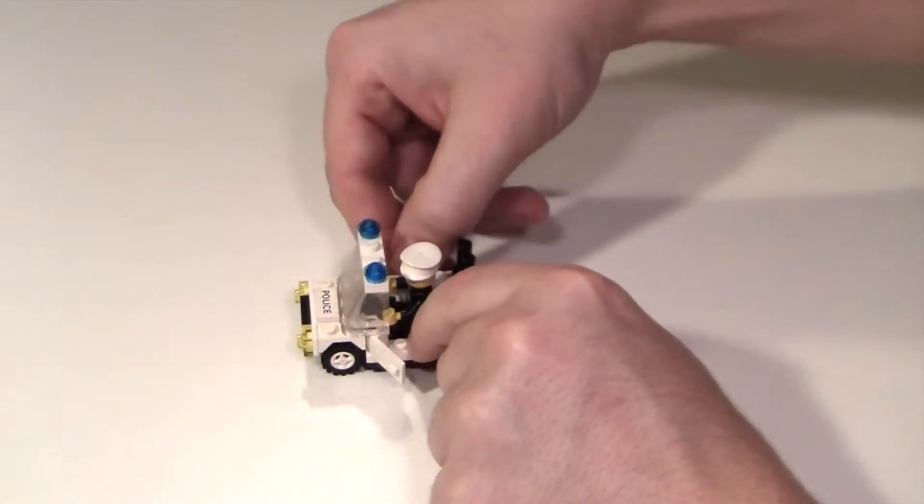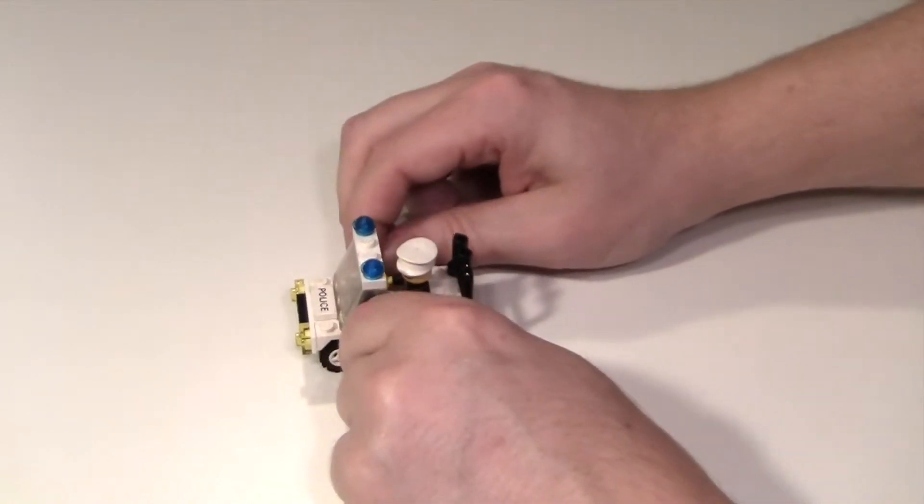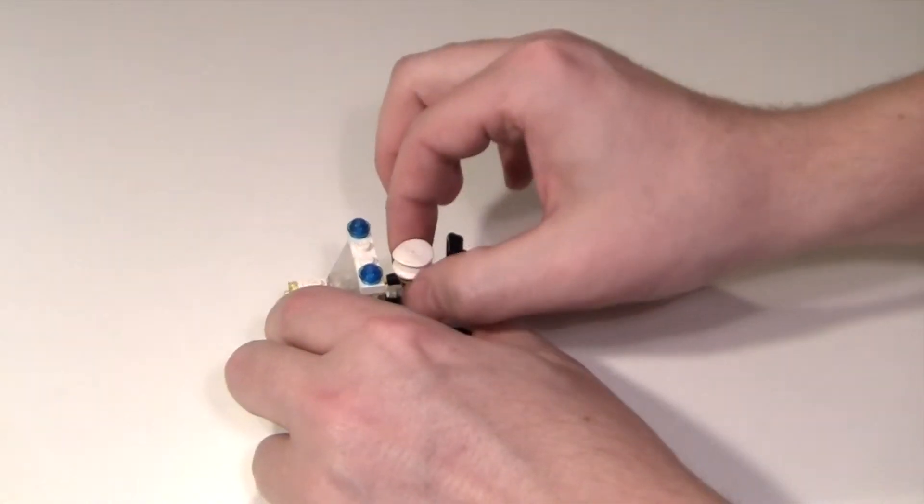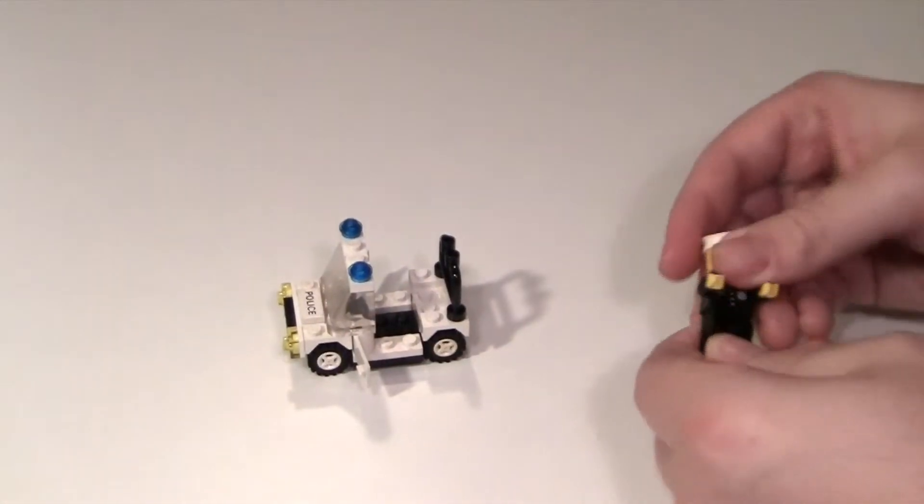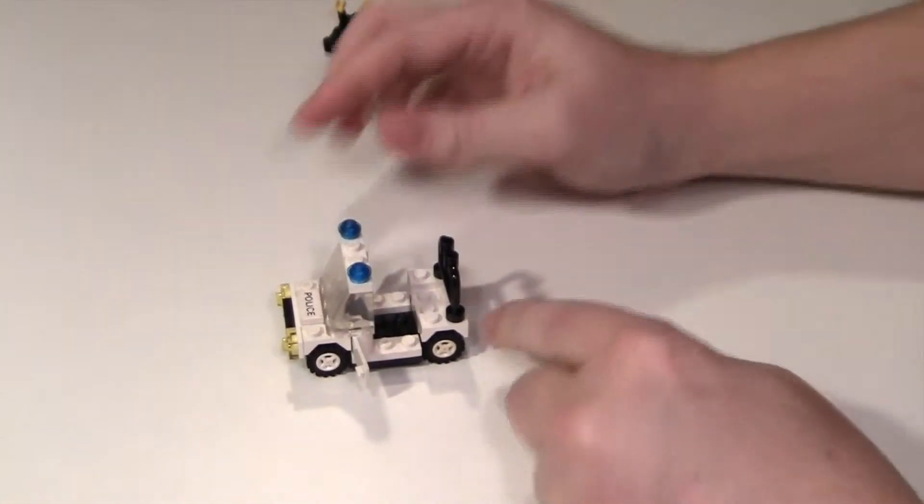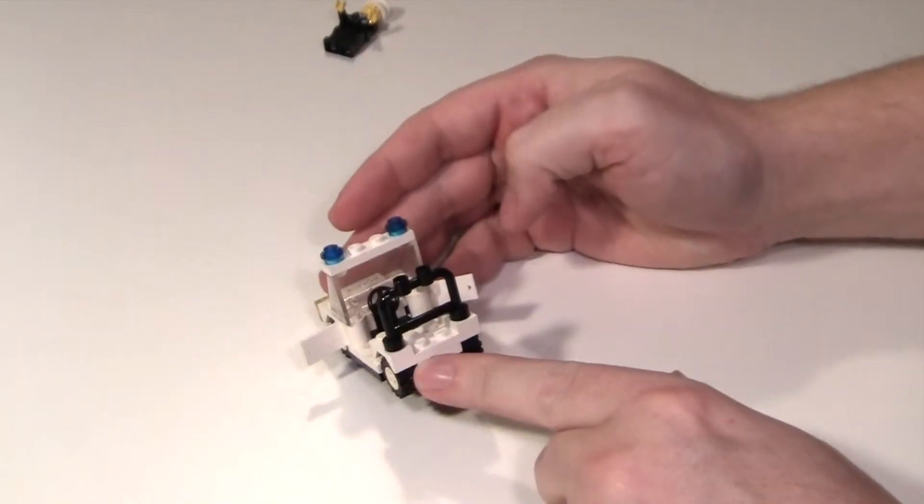He's got these doors that can open and you can take him out. We'll take a look at him in a minute. No seats, but he's got this black steering wheel.